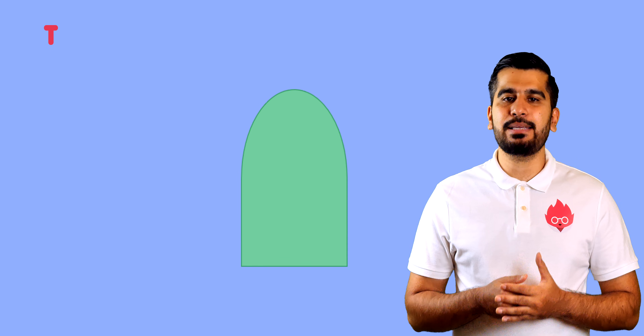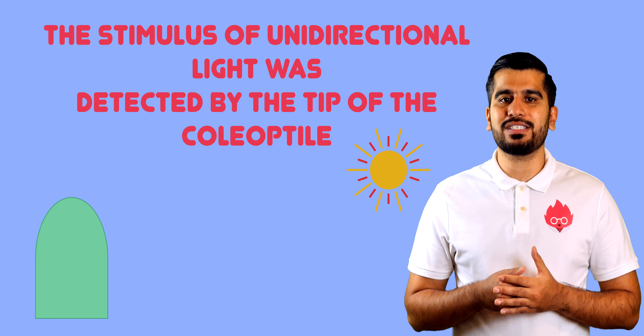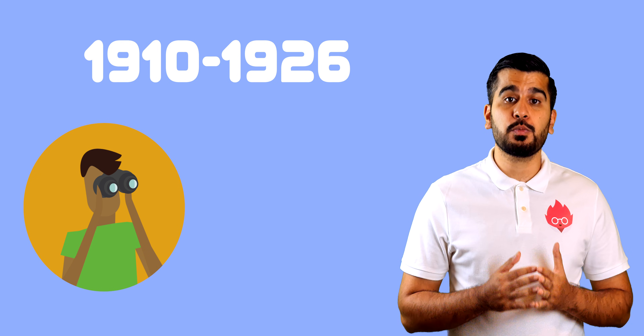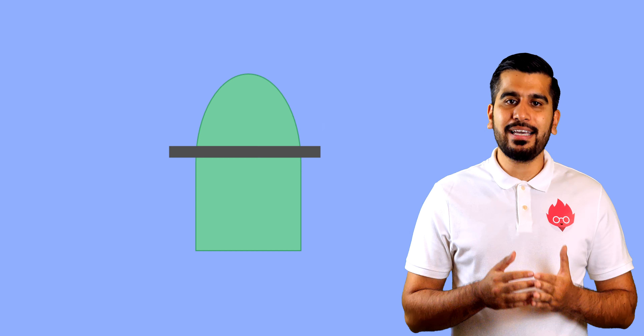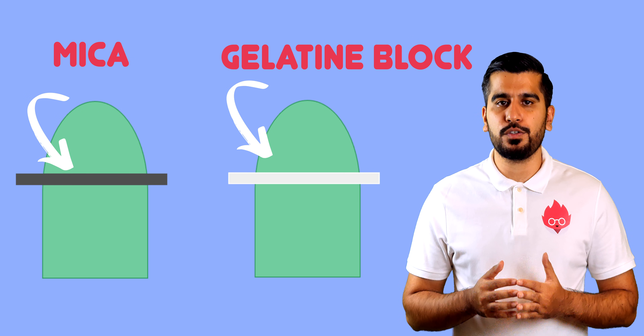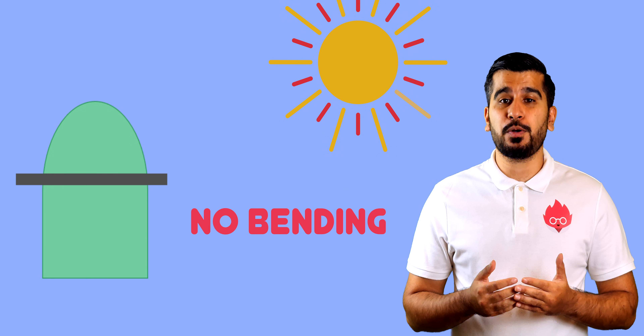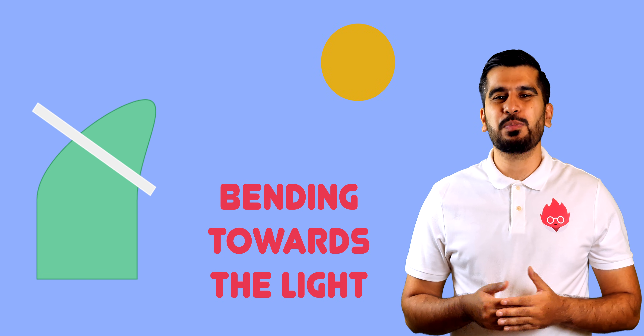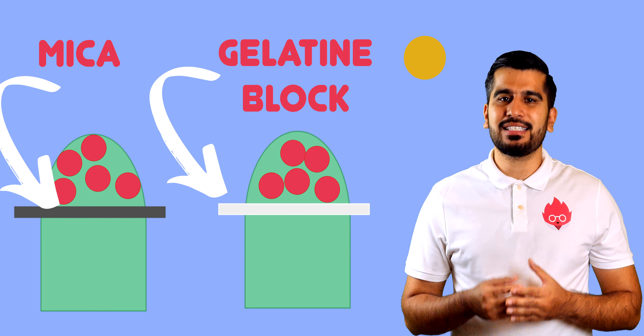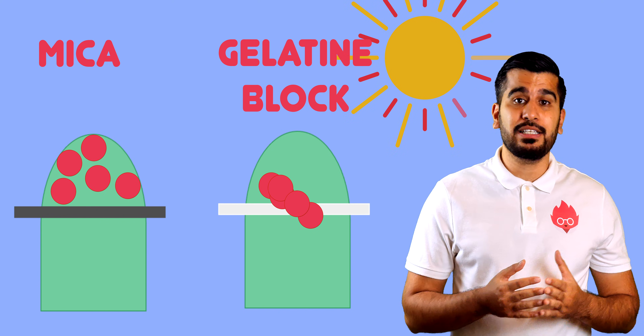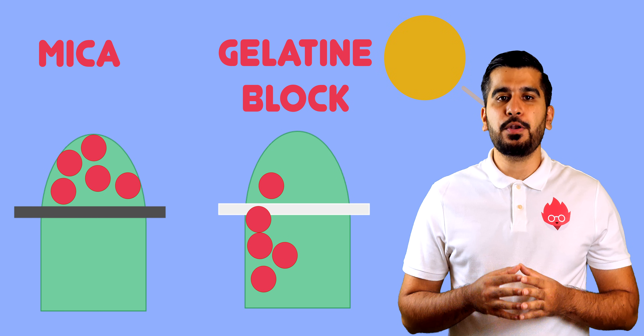His experiment showed that the stimulus of unidirectional light was detected by the tip of the coleoptile. Between 1910 and 1926, scientists began to look for the chemical messenger responsible for phototropism in coleoptiles. In the first experiment, a mica sheet was placed through the tip, and a gelatin block was used. With the mica sheet, which is a mineral insoluble to water, there was no response to the light source. But the coleoptile with the gelatin block, which is soluble, showed growth in response to the light source. This showed that the chemical messenger was soluble in water, as it was able to pass through the gelatin block but not the mica.